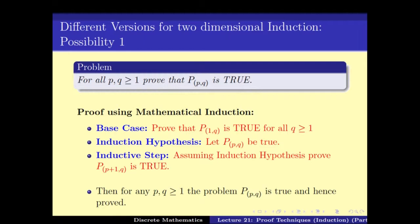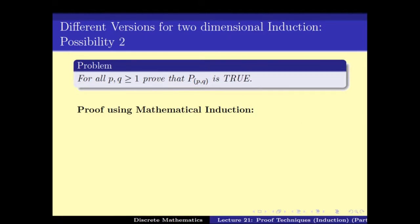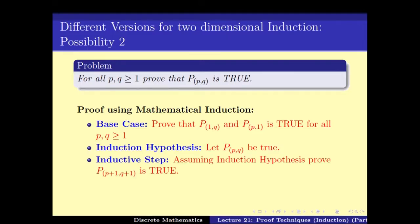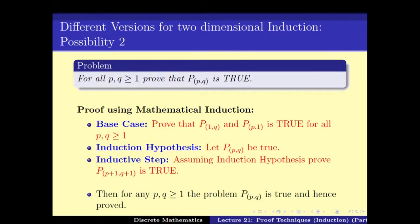One approach is to prove that (1,q) is true, and then assuming the problem is true for parameter (p,q), prove it for (p+1,q). This ensures that all points in the two-dimensional space are covered and hence we have the whole proof. We can also have different versions — for example, both (1,q) and (p,1) can be base cases, and then if (p,q) is true then (p+1, q+1) is true — this is also a sufficient condition.